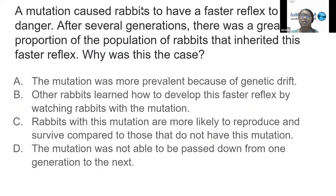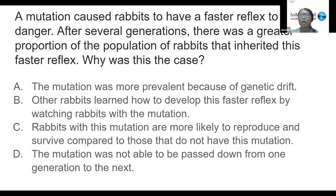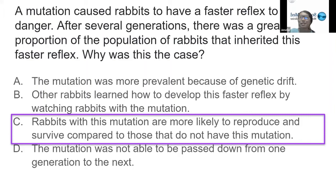For the final practice question, 100% of respondents chose answer C — great job. The question states: a mutation caused rabbits to have a faster reflex to sense danger; after several generations there was a greater proportion of the population that inherited this faster reflex. Why was this the case?